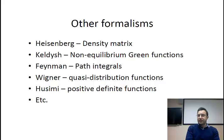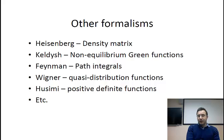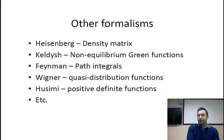Other formalisms of quantum mechanics exist — Schrödinger is not the whole story. For example, another early formulation was given by Heisenberg in terms of density matrices. Eventually Paul Dirac showed that the Heisenberg and Schrödinger formalisms are actually the same, just different facets of the same theory. You also have drastically different ways of describing quantum mechanics, such as the Keldysh formulation, also known as the non-equilibrium Green's function formalism, where the main unknown is the non-equilibrium Green's function. You also have the formulation given in the 1950s by Feynman, which is the path integral method.